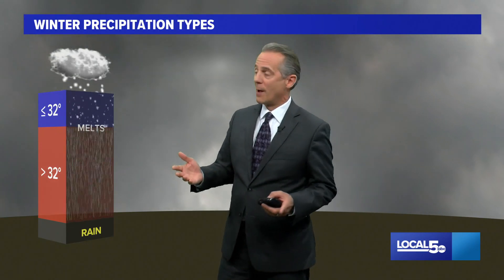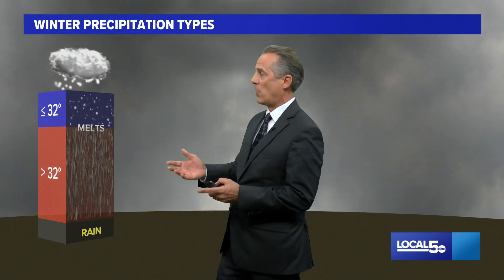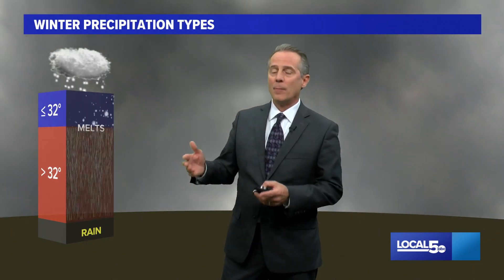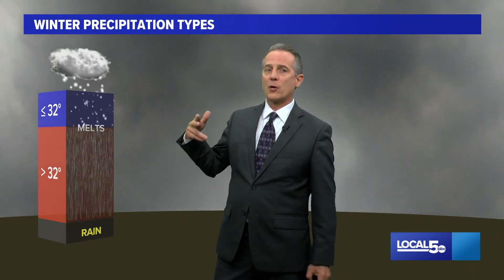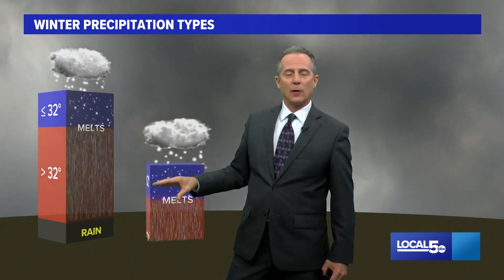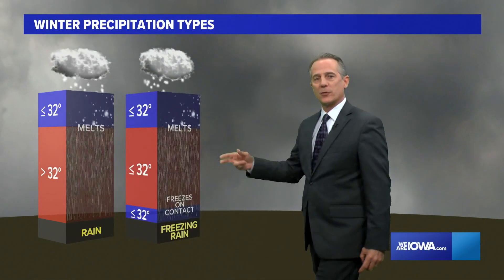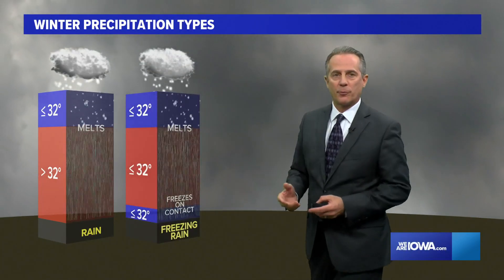That happens a lot of the time through spring, fall, and summer. But in the winter we start to get colder air at the lower levels, so we start to see different types of precipitation.